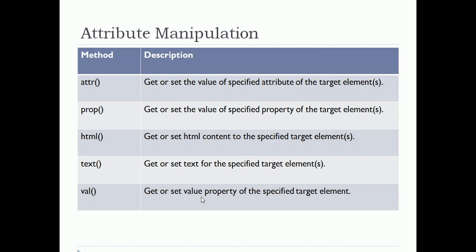Next is the val method, which is used to get or set the value property of a specified target element. Most of the time val is used with all input elements — like input type text, input type radio, input type checkbox, input type password. Even it is used with dropdown lists. For everything you will definitely use the val method.